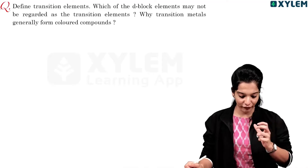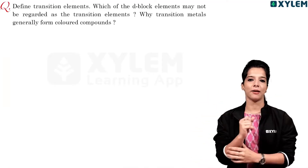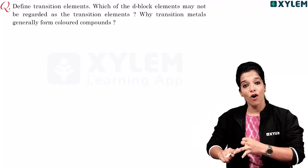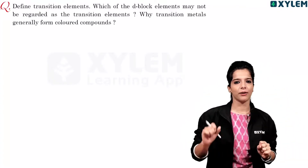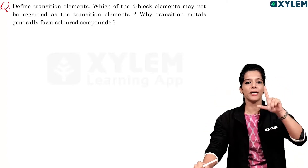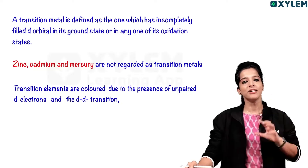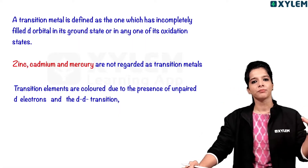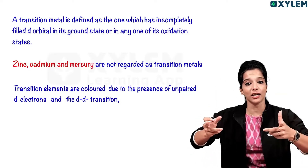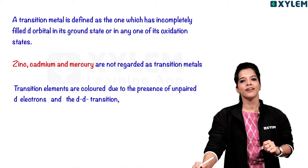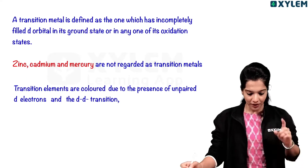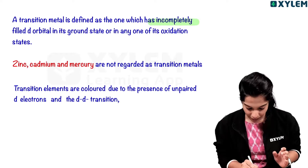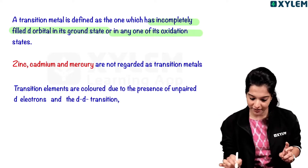While transition metals generally form colored compounds. A transition element is one which has incompletely filled D orbital in its ground state or in any one of its oxidation states. That is the transition element.